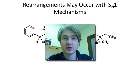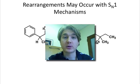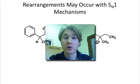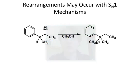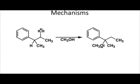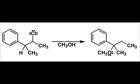In this webcast, we'll take a look at where carbocation rearrangements will occur within our SN1 and E1 type mechanisms. In this particular example, we have an alkyl chloride reacting with methanol; however, that oxygen is not substituted where we think it would be — it's actually one carbon over.